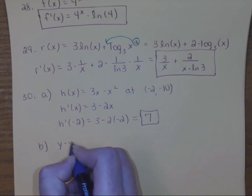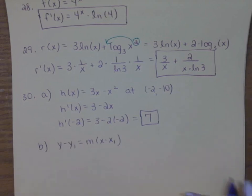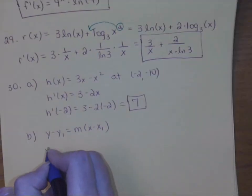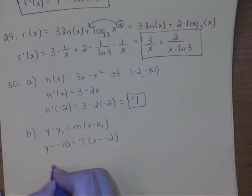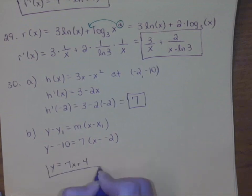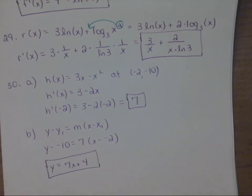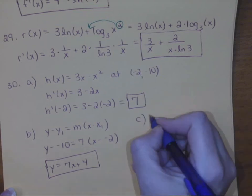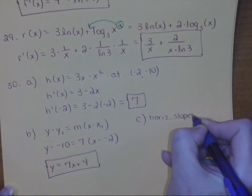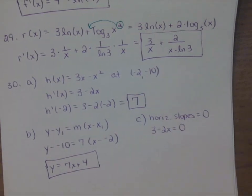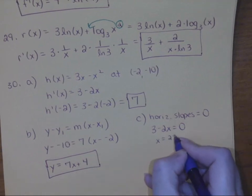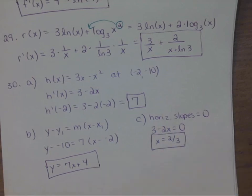For part b, recall the point-slope form — the equation for a line — so we plug in what we know: y minus the y-value equals the slope times (x minus the x-value). If you clean that up you'll get y equals 7x plus 4. For part c, identify the values where the tangent line is horizontal. Remember that horizontal slope equals 0, so set the derivative equal to 0 and solve. You'll get x equals 2 thirds — at x equals 2 thirds the slope is horizontal.